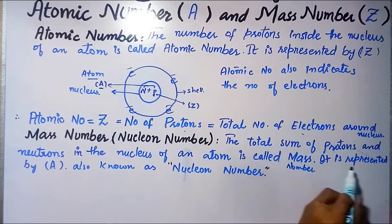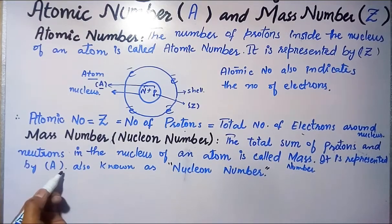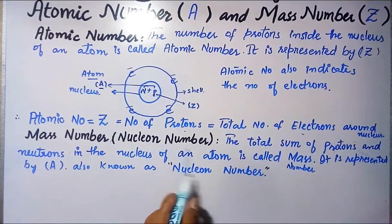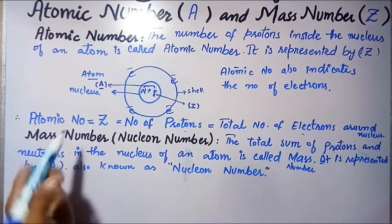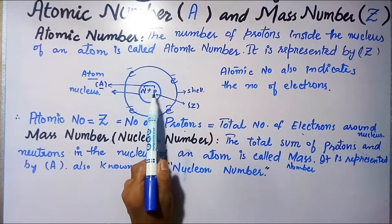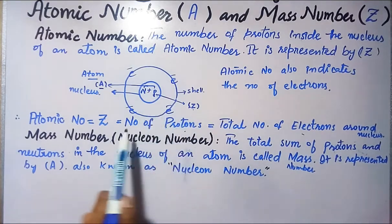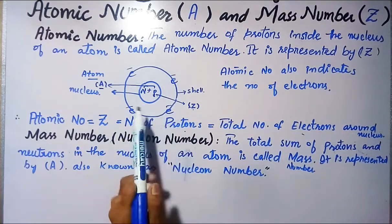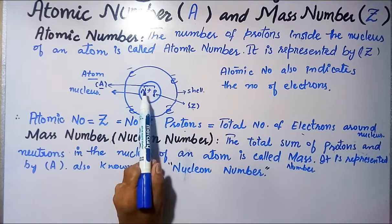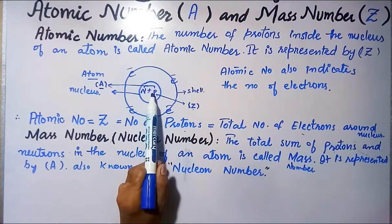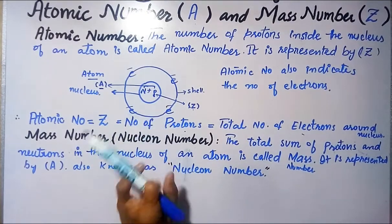Mass number is represented by A, and it is also known as the nuclear number. So to summarize: atomic number is the number of protons represented by Z, and mass number is the total sum of neutrons and protons inside the nucleus of an atom, represented by A.